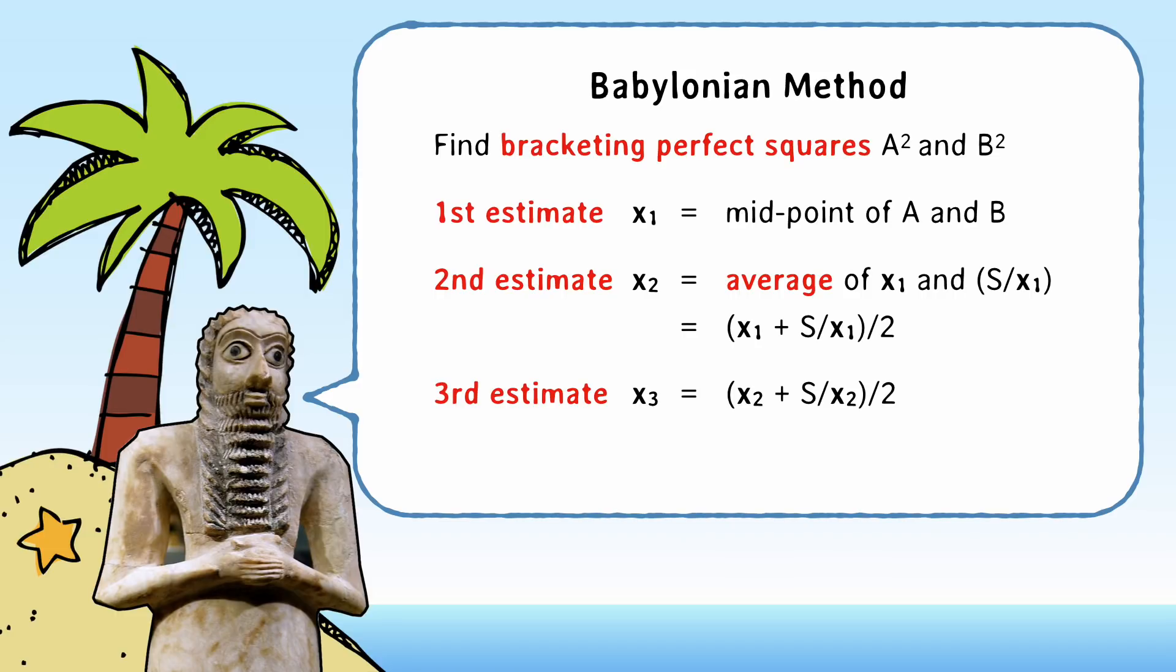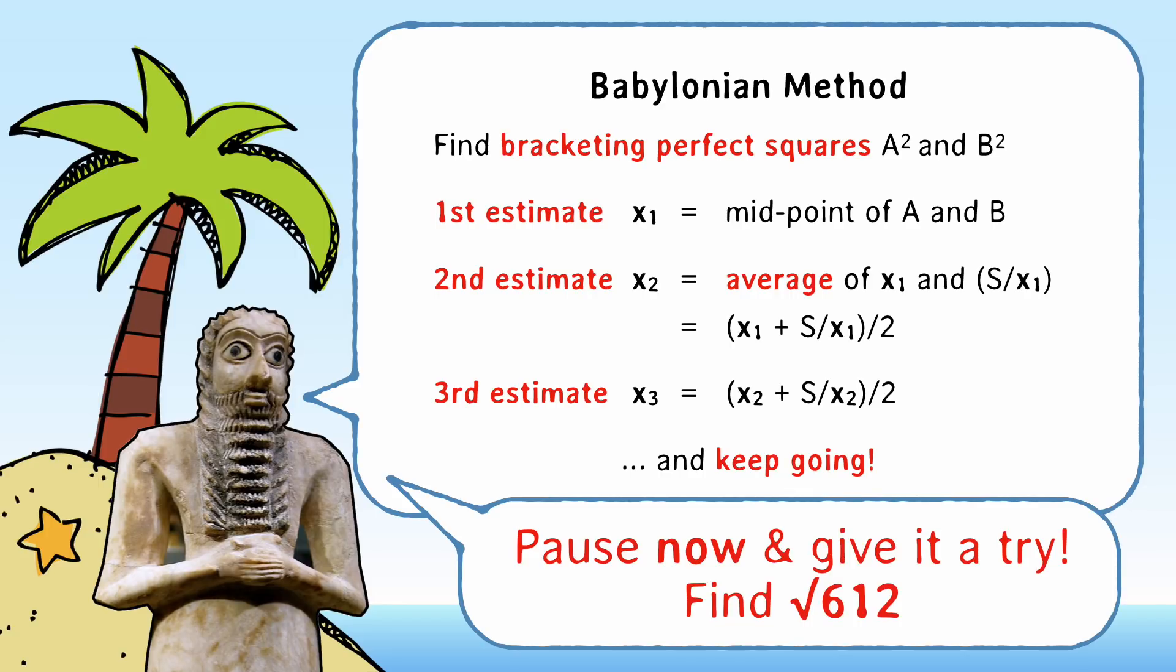And like before, just keep iterating until you get to the accuracy that you want. So go ahead, give some 4,000-year-old maths a shot and calculate the square root of 612 to 5 decimal places with the Babylonian method and see how long it takes.